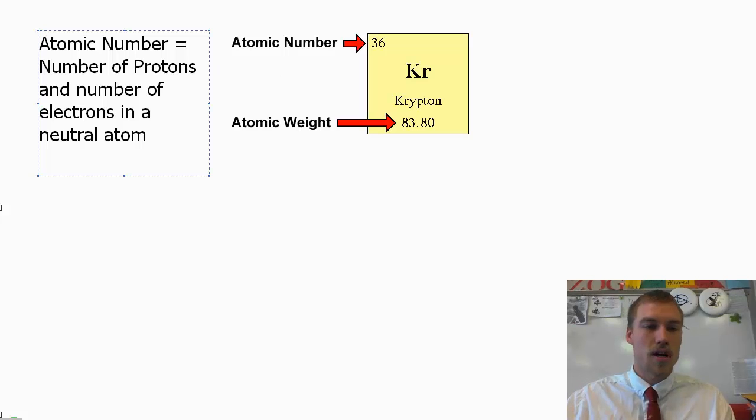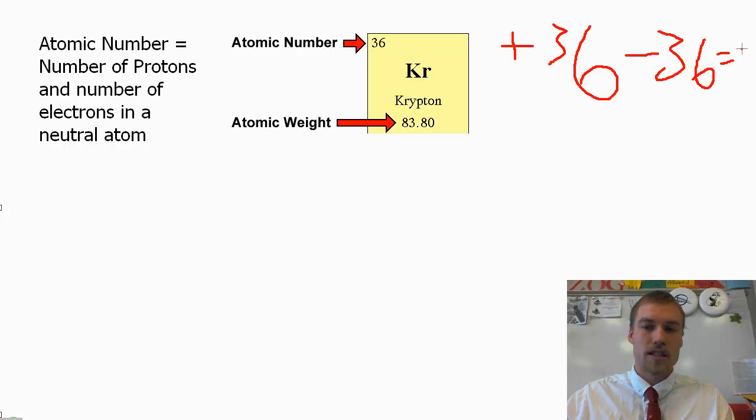So we've got that positive charge of plus 36, we need a negative charge of minus 36 in order for that to equal 0 and for our atom to be overall neutral. So that's the reason why the atomic number is going to be the number of protons and the number of electrons.